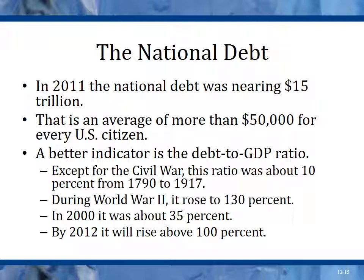In 2011, the national debt was nearing $15 trillion — an average of more than $50,000 for every U.S. citizen. A better indicator is the debt-to-GDP ratio. Except for the Civil War, that ratio was about 10% from 1790 to 1917, right around the time income tax was put into place. That's when government spending really started to explode. During World War II the ratio rose to 130% to finance the war effort, then came right back down. In 2000 it was about 35%, and by 2012 it rose above 100%, reaching close to 105% in 2013.